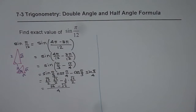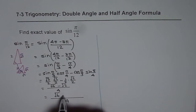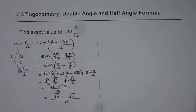This gives us (√6 - √2) over 4. So that is the answer: (√6 - √2)/4. That is the exact value for sine(π/12). This is the first way of doing it, using the compound angle formula.